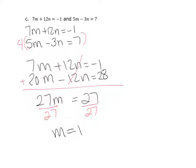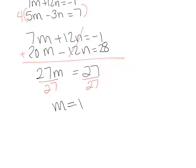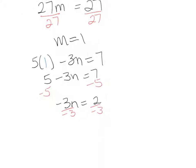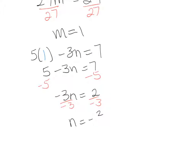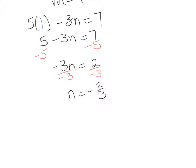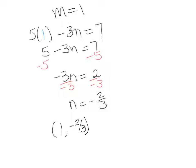I substitute m equals 1 into the second equation: 5 times 1 minus 3n equals 7, so 5 minus 3n equals 7. Subtracting 5 from both sides gives negative 3n equals 2. Dividing by negative 3 gives n equals negative two-thirds. Since the variables are m and n rather than x and y, we write the ordered pair in alphabetical order: (1, negative 2/3).